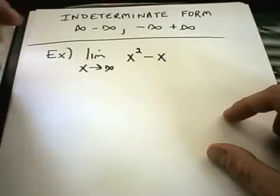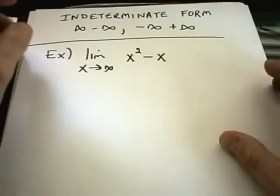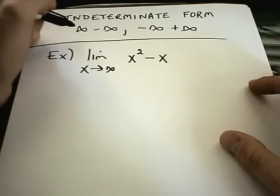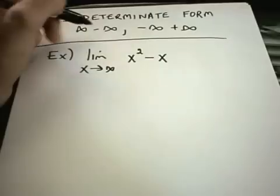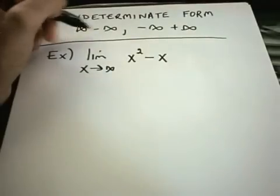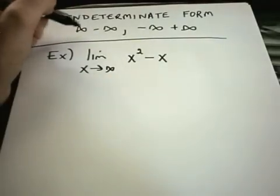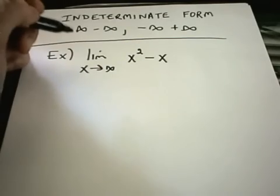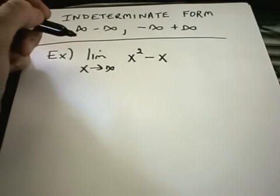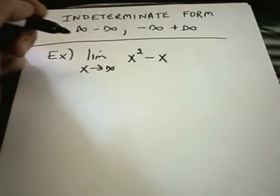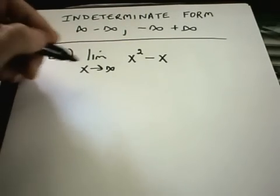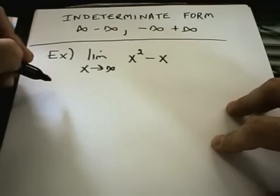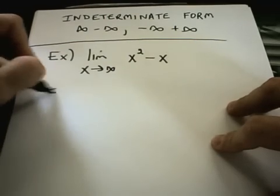The third type of indeterminate form we're going to talk about is sometimes called indeterminate differences. The idea is one part's going to positive infinity, the other part's going to negative infinity — so infinity minus infinity, or negative infinity plus infinity equivalently. These are a little less mechanical than some of the other problems, so sometimes you just have to be a little clever on how you deal with them.